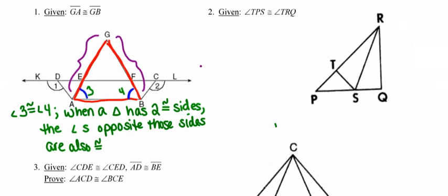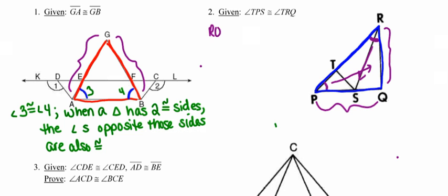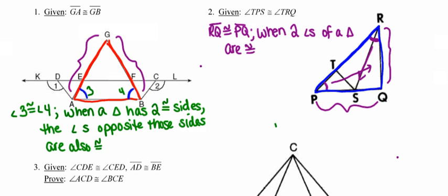Moving ahead to number two, the given is a little different. Angle TPS is the small purple angle in the bottom left corner, and angle TRQ is the purple angle at the top of the triangle. I'll highlight this blue isosceles triangle. Because those base angles are congruent, the sides opposite them are also congruent. The side opposite angle TRQ is side PQ, and the side opposite angle P is side RQ. So segment RQ must be congruent to segment PQ, because when a triangle has two congruent angles, the sides opposite those angles are also congruent.